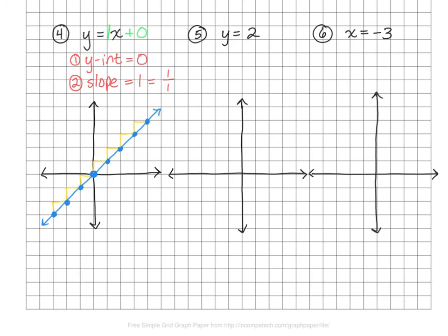Let's take a look at number 5: y equals 2. Wait — where's the x? Anytime the x is missing, you can rewrite it as y equals 0x plus 2. If a missing y-intercept means the y-intercept is 0, then a missing slope means the slope is 0. So the y-intercept is 2 — start at the origin, go up to 2 and put a point. A slope of 0 means perfectly horizontal, so there are no stair steps — just draw a horizontal line. Anytime you see y equals any number, it's always a horizontal line crossing the y-axis at that number.